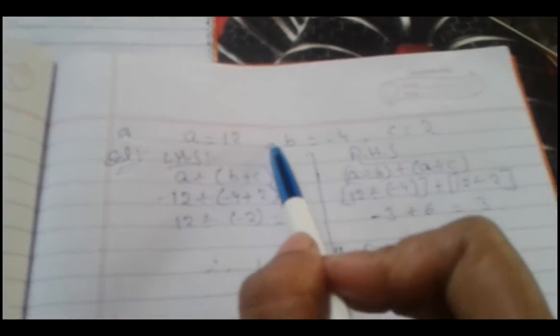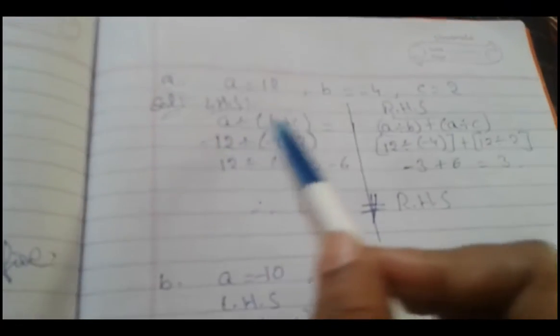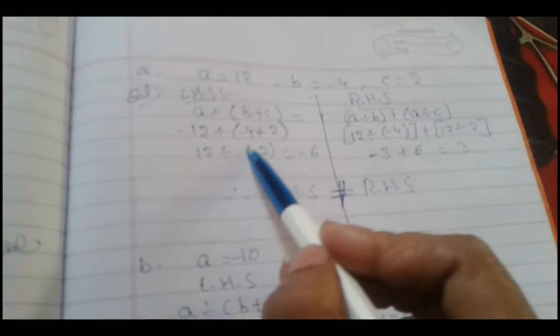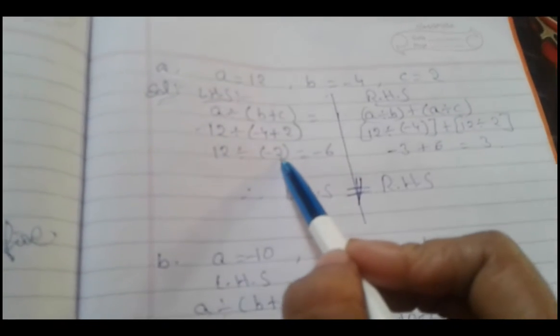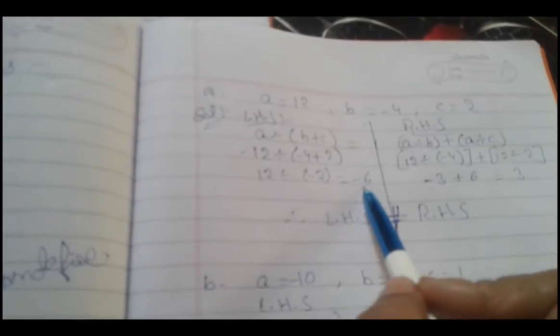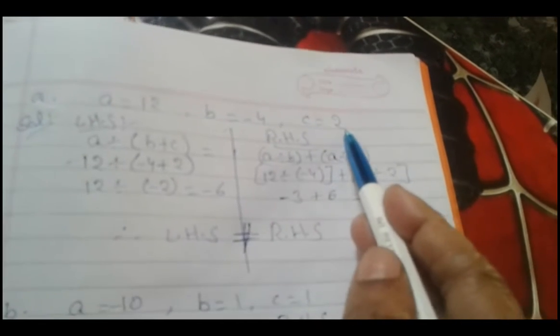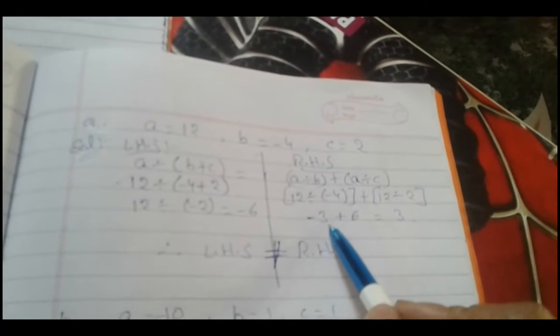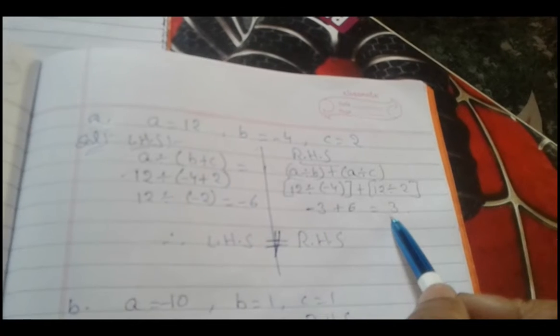The value of a is 12, b is minus 4, and c is 2. For LHS: 12 divided by (minus 4 plus 2) equals 12 divided by minus 2, which gives minus 6. For RHS: 12 divided by minus 4 is minus 3, plus 12 divided by 2 is 6. So RHS is minus 3 plus 6. One is negative and one is positive, so we subtract: 6 minus 3 gives positive 3. LHS is minus 6 and RHS is plus 3 — they are not equal.